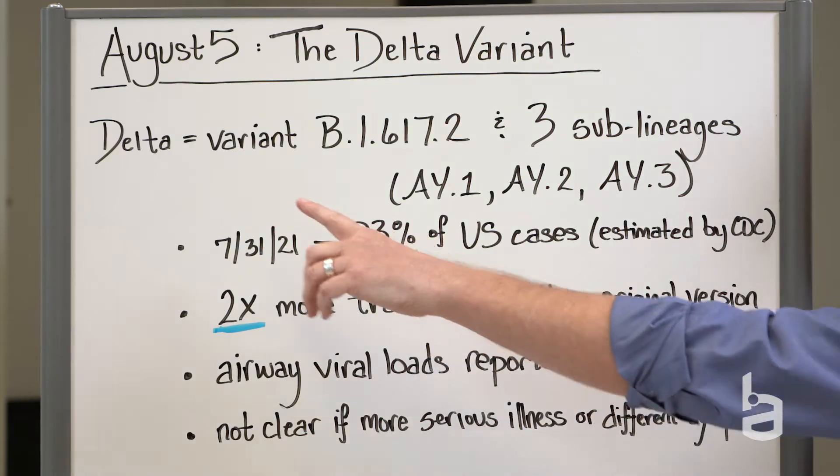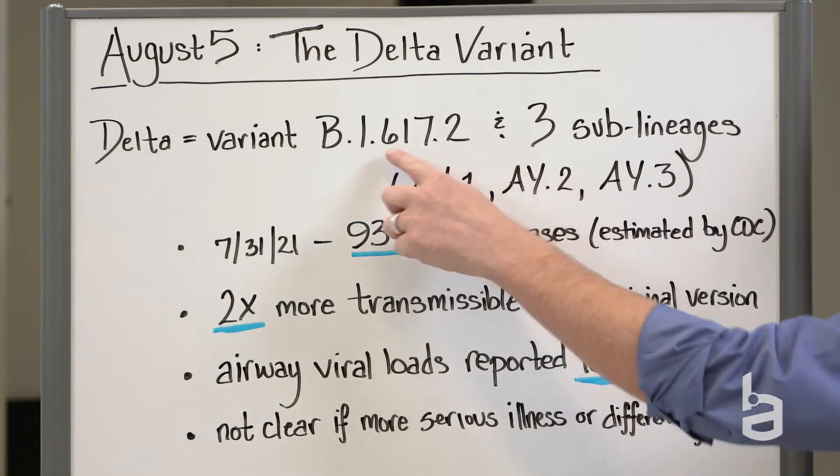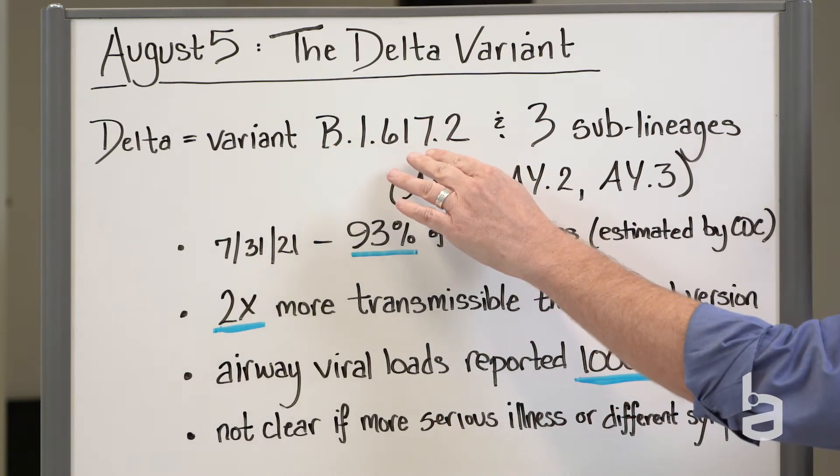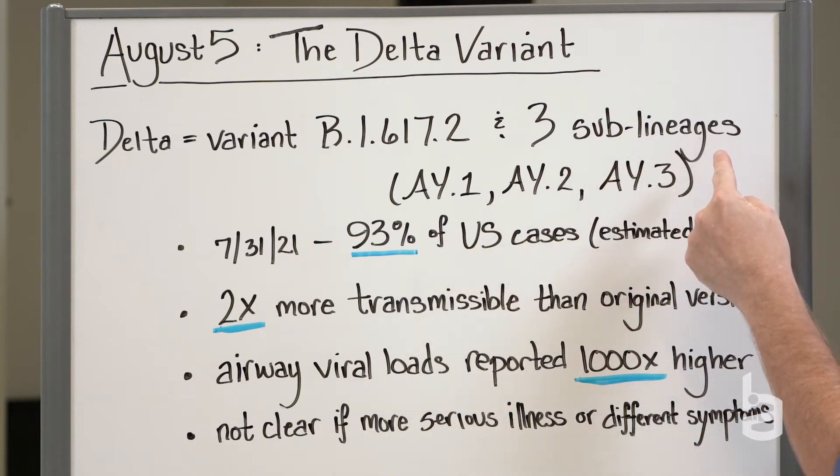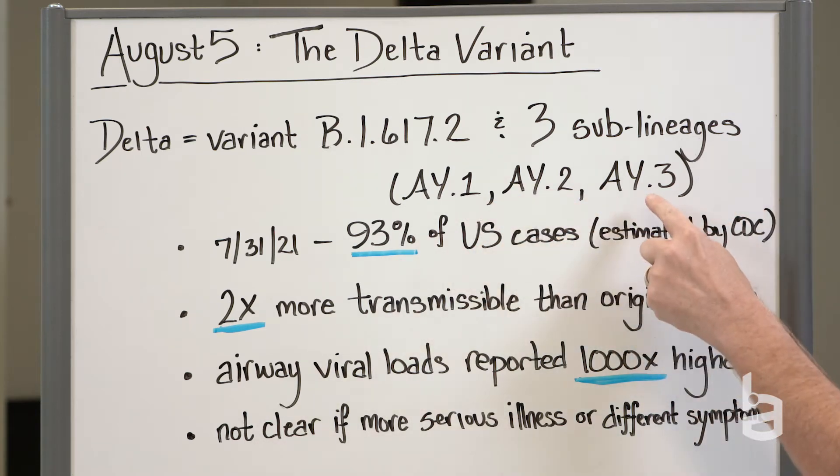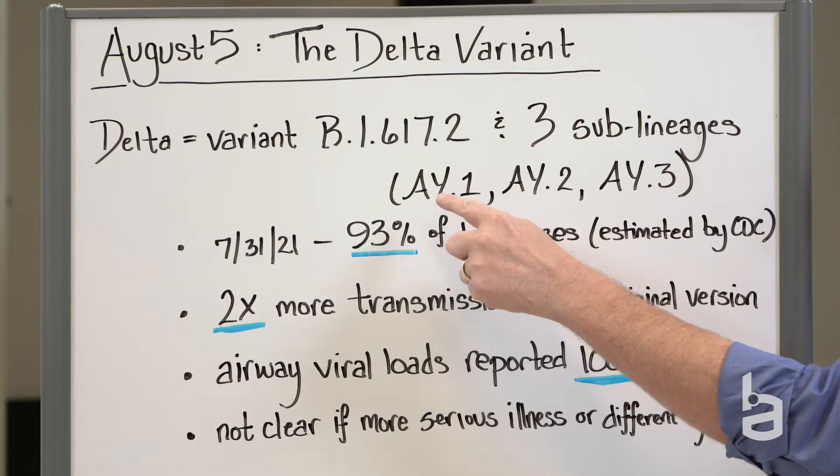So obviously we're talking about the Delta variant. This is the specific scientific name and it includes not only this version of the virus, but three sub-lineages which are very similar, but they've acquired or changed a couple of different mutations. AY1, AY2, and AY3. AY1 is sometimes called Delta Plus.